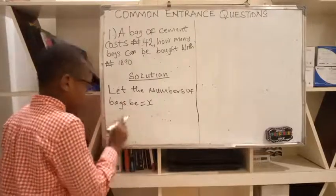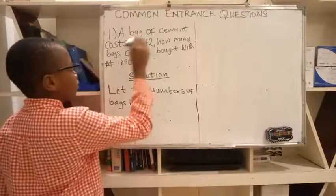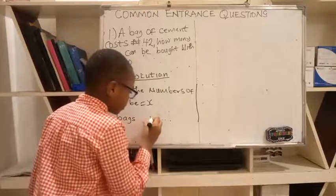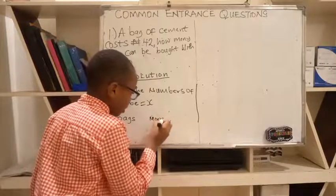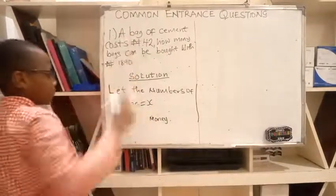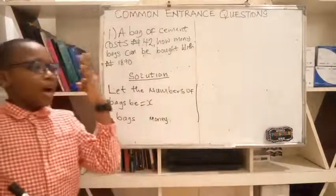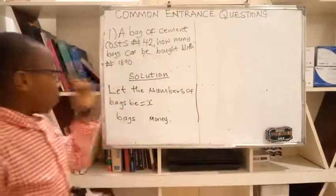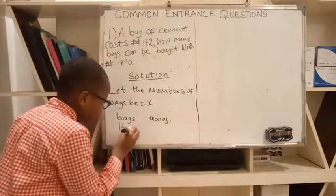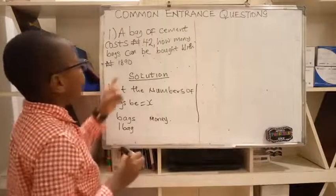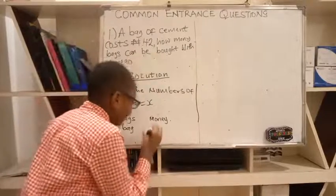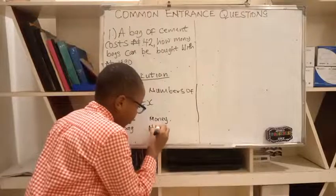From here we're going to use the main parameter and arrange them. I'll write bags and money. One bag costs 42 naira.